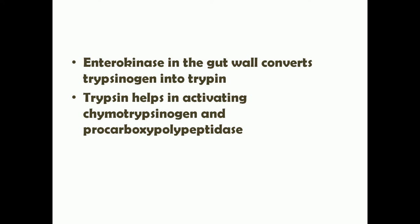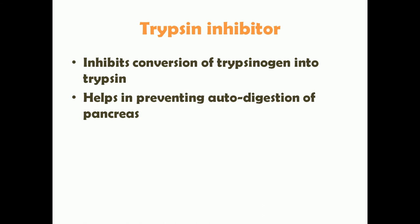These enzymes get activated as soon as they reach the intestine. An enzyme known as enterokinase, present on the epithelium of the duodenum and upper jejunum, converts inactive trypsinogen into active trypsin. Trypsin then acts on chymotrypsinogen and pro-carboxypeptidase to activate them into chymotrypsin and carboxypeptidase. There is also a trypsin inhibitor secreted in the pancreatic acini alongside the inactive enzymes, whose main function is to inhibit the conversion of trypsinogen into trypsin, thereby preventing autodigestion.